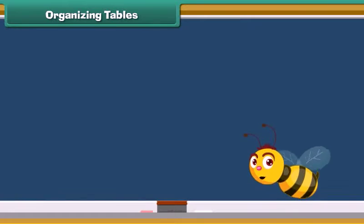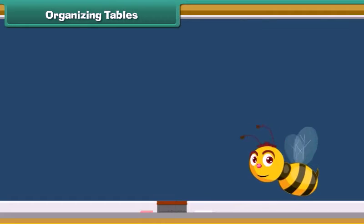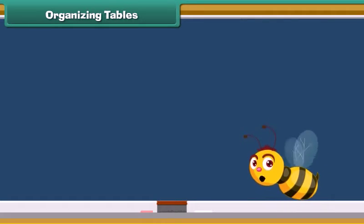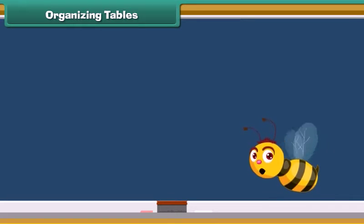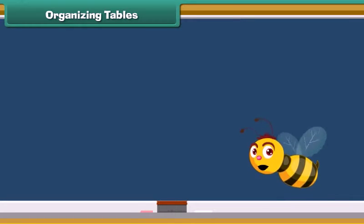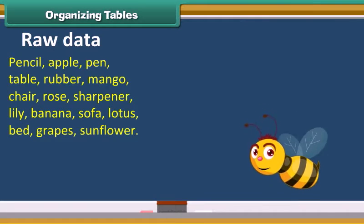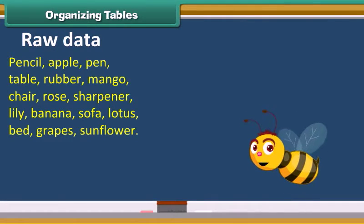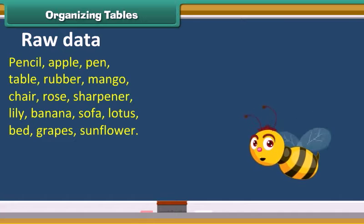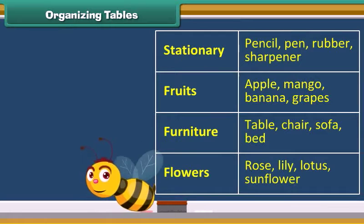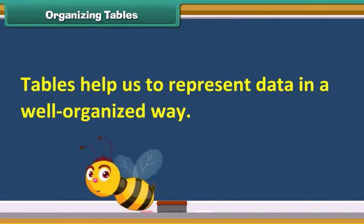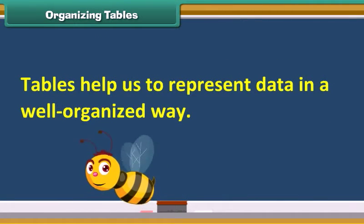Friends, it is easier to find out things when they are kept properly. Well arranged things are easy to handle. Similarly, organized data is easy to interpret. Unorganized data is called raw data. We can arrange this data properly by using a table. Tables help us to represent data in a well organized way.